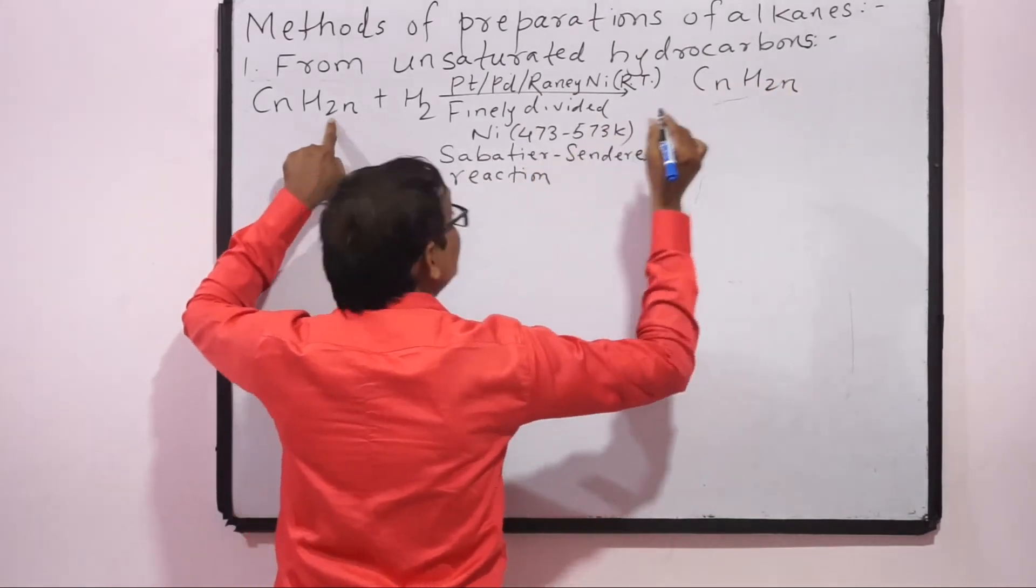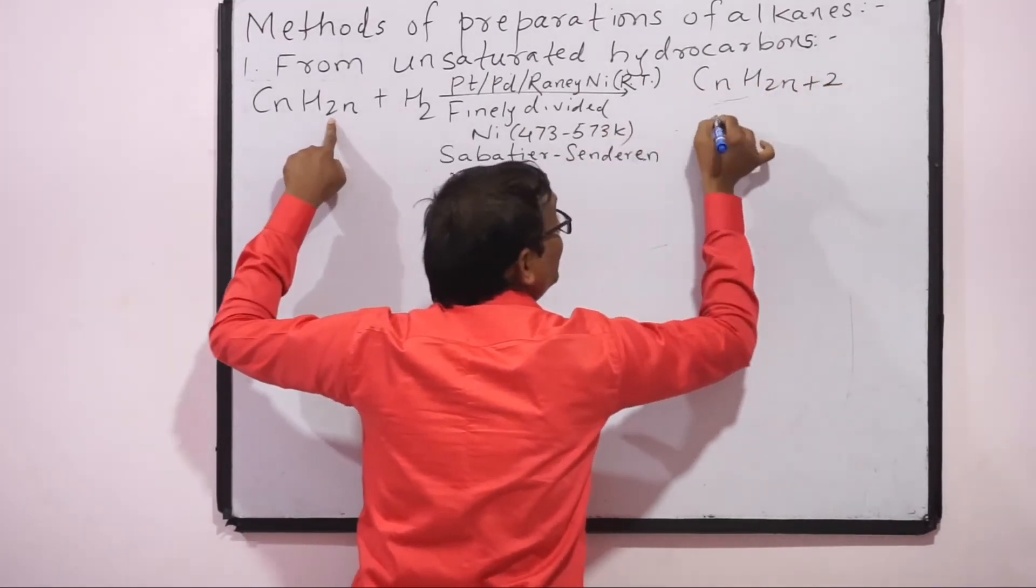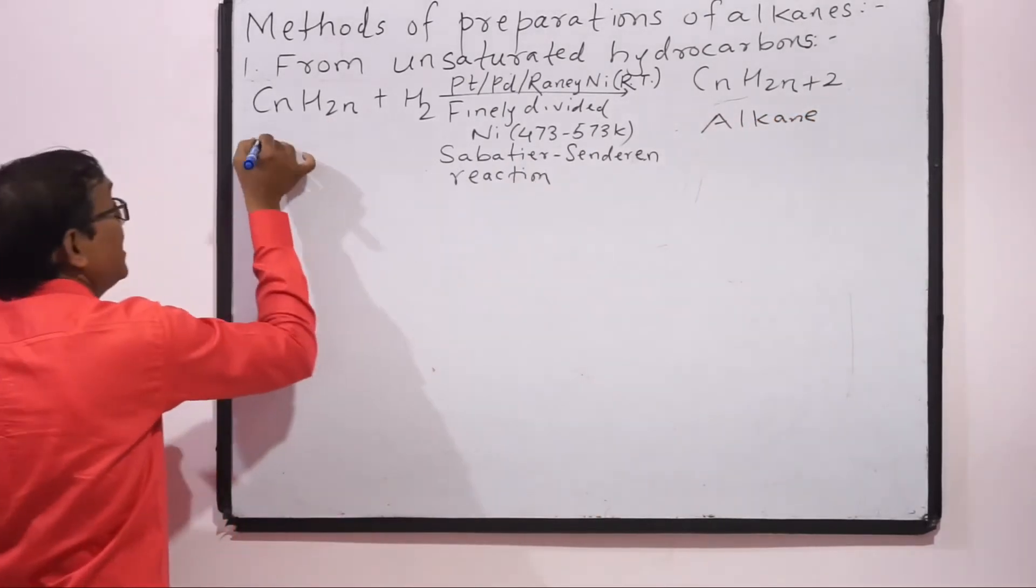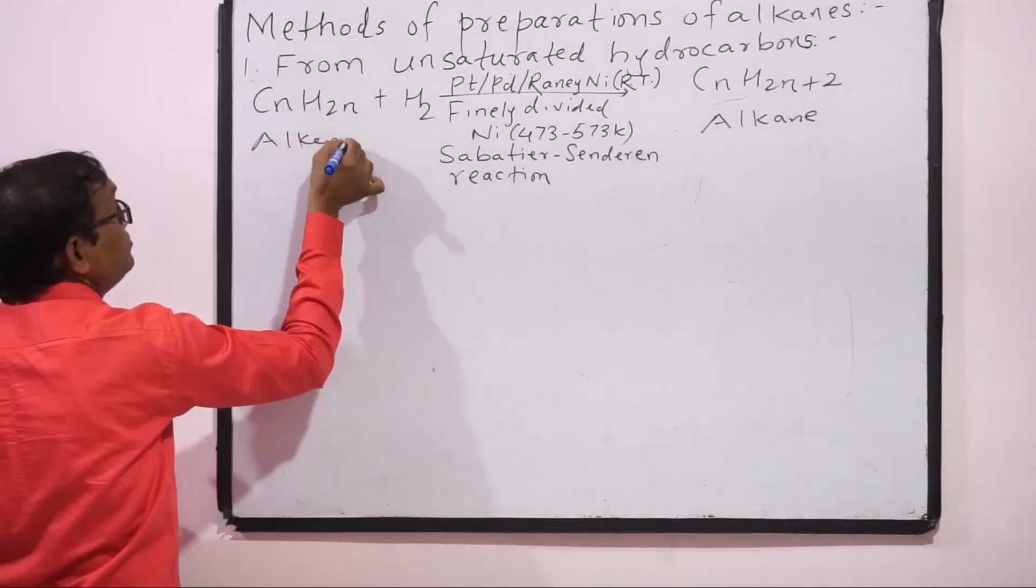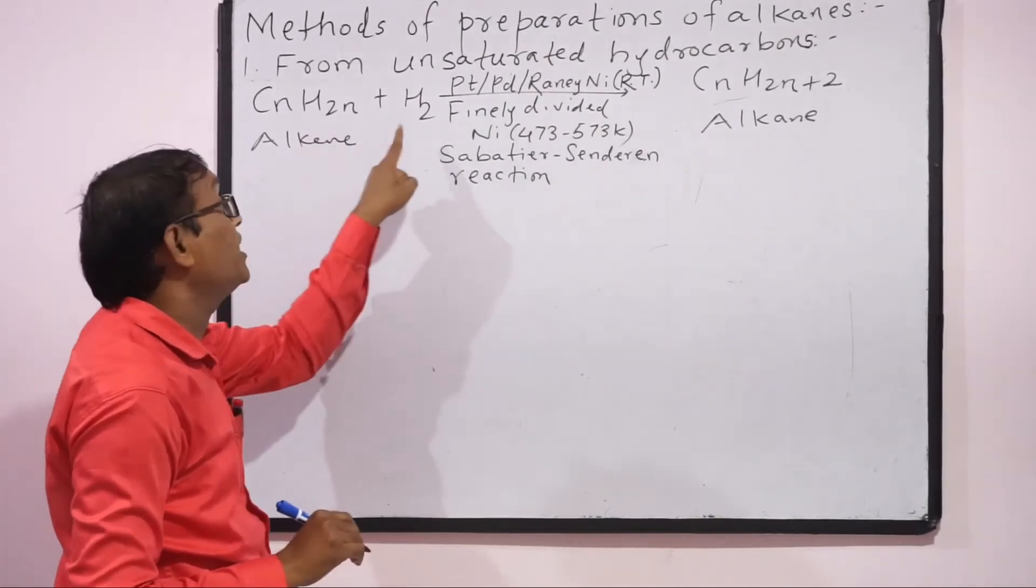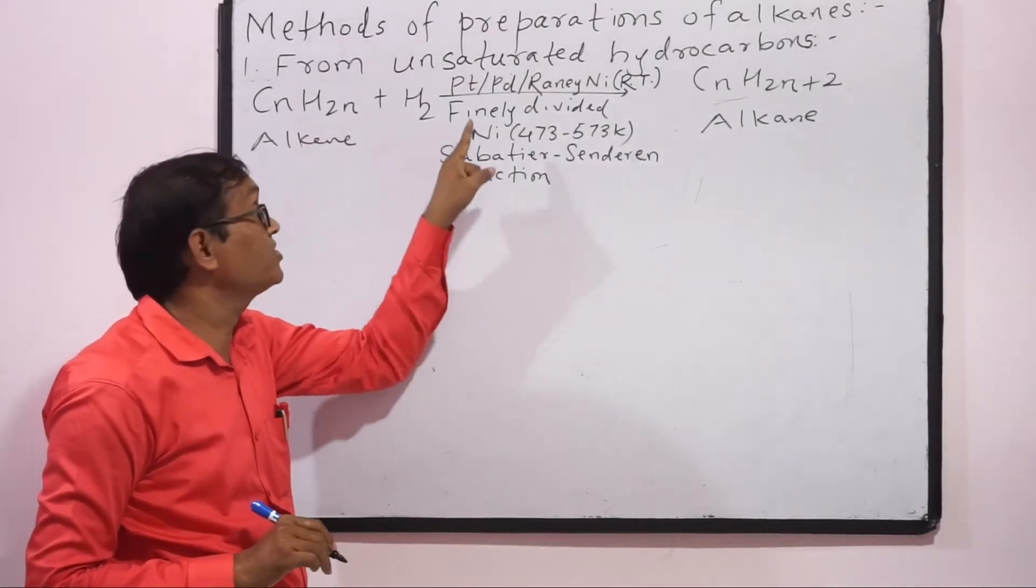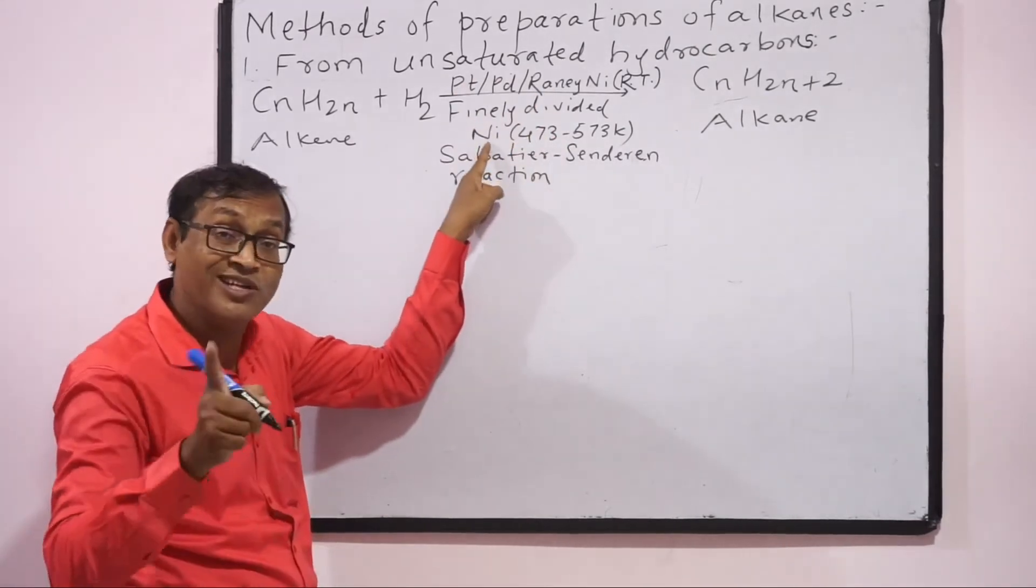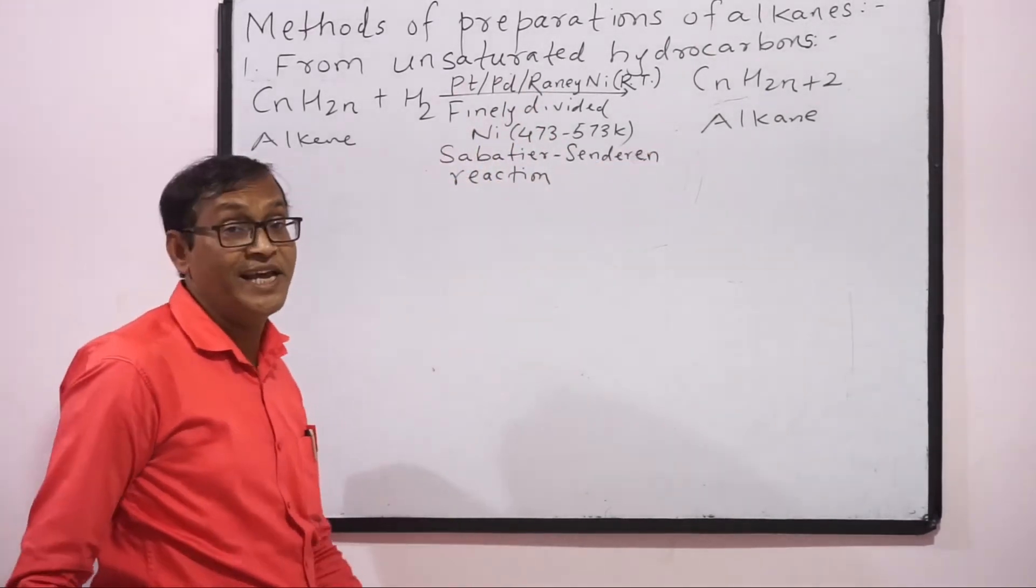The general formula: CnH2n plus H2 gives CnH2n+2. This is the general formula of alkene, this is the general formula of alkane. Therefore alkene on heating with hydrogen gas in presence of platinum, palladium, raney nickel, or finely divided nickel as catalyst, alkane is obtained.